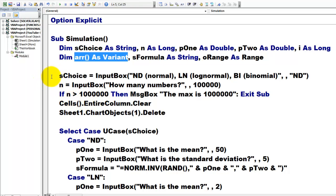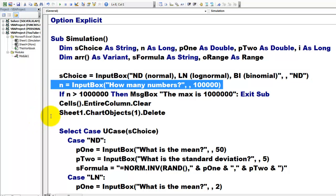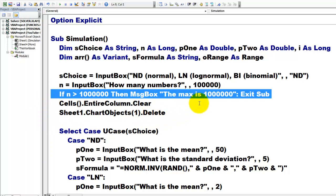Then we ask the user: do you want a normal, a lognormal, or a binomial distribution? Then we let them determine how many numbers they want. If you have more than a million, we will stop this because we don't have enough rows.